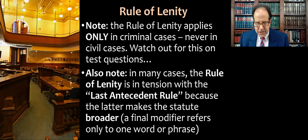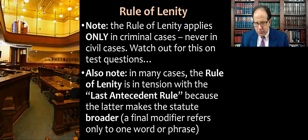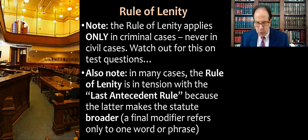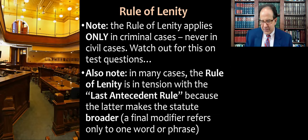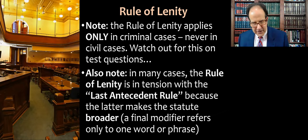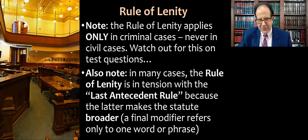In many cases the rule of lenity is in tension with the last antecedent rule, like in United States v. Bass, because the latter makes the statute broader. The last antecedent rule says a final modifier refers only to one word or phrase, which makes it easier for the prosecution to win. When you read criminal cases that go to the Supreme Court, you'll often see that when there's a majority and a dissent, one group of justices is talking about the rule of lenity and the other is talking about the last antecedent rule, and vice versa.